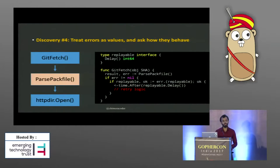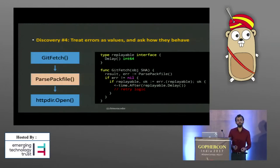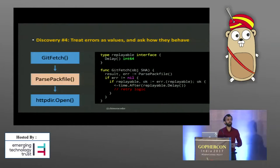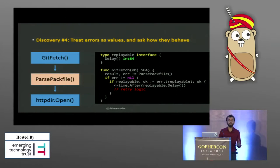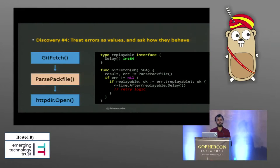In this way, the underlying implementation — in this case maybe the HTTP dir package — is aware of that error's behavior. The git fetch function is also aware of it. But parse-pack-file doesn't need to be — it shouldn't need to know anything about network communication if it's not doing any of it itself. Instead of forcing tight coupling, we get a superior abstraction by asking for behavior only when we need it.